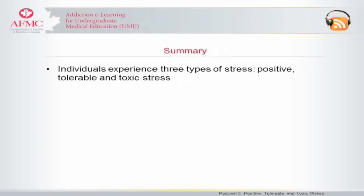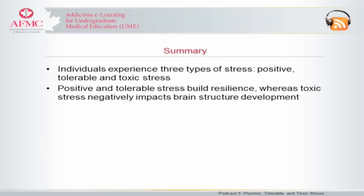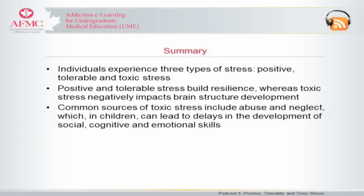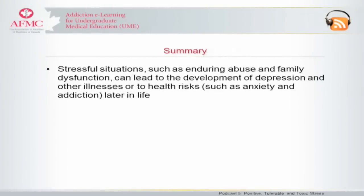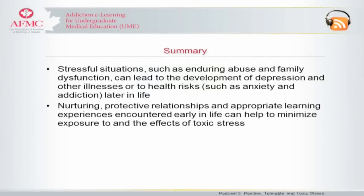Here is a summary of the key points in this podcast. There are three types of stress that we encounter in our lives: positive, tolerable, and toxic stress. Positive and tolerable stress build resilience, whereas toxic stress negatively impacts brain structure development. Common sources of toxic stress include abuse and neglect, and these can lead to developmental delays in social, cognitive, and emotional skills in children. Stressful situations such as abuse and family dysfunction can lead to the development of depression and other illnesses or health risks, such as anxiety and addiction, later in life. Nurturing protective relationships and appropriate learning experiences early in life can help to minimize the exposure to and effects of toxic stress.